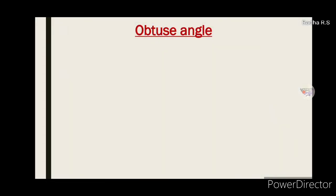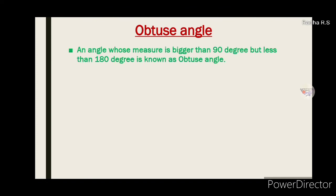Now friends, we are going to learn about obtuse angle. What is obtuse angle? An angle whose measure is bigger than 90 degrees but less than 180 degrees is known as obtuse angle.